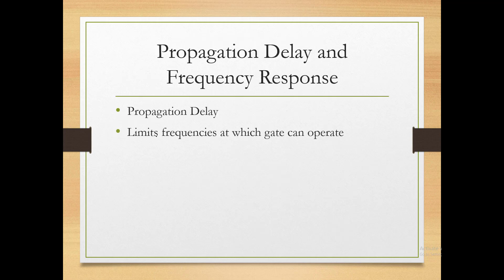Propagation delay limits the frequency at which a gate can operate. If switching is occurring faster than the propagation delay allows, the gate will not work correctly. The propagation delay limits the frequency — the gate can only operate up to the frequency determined by its propagation delay.